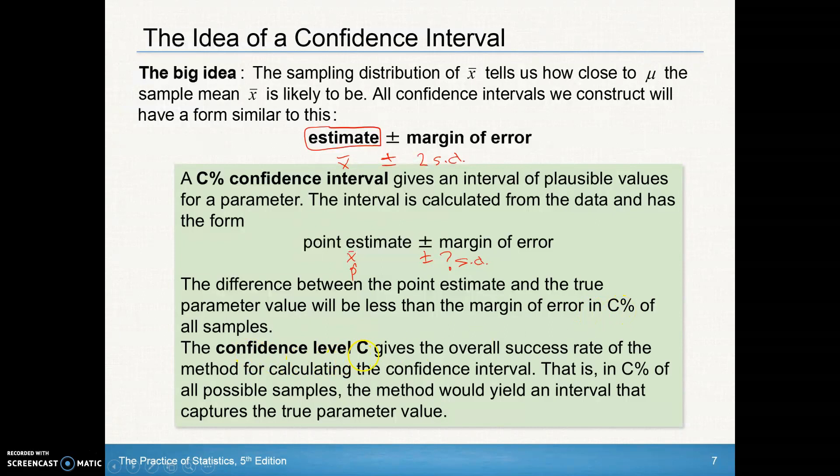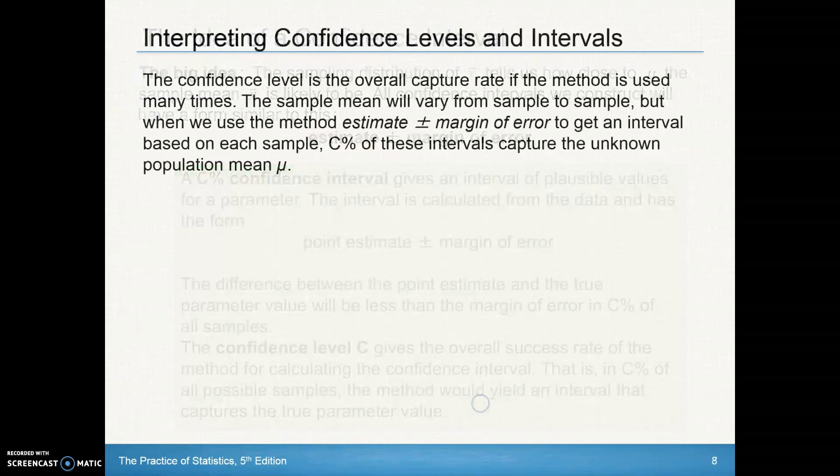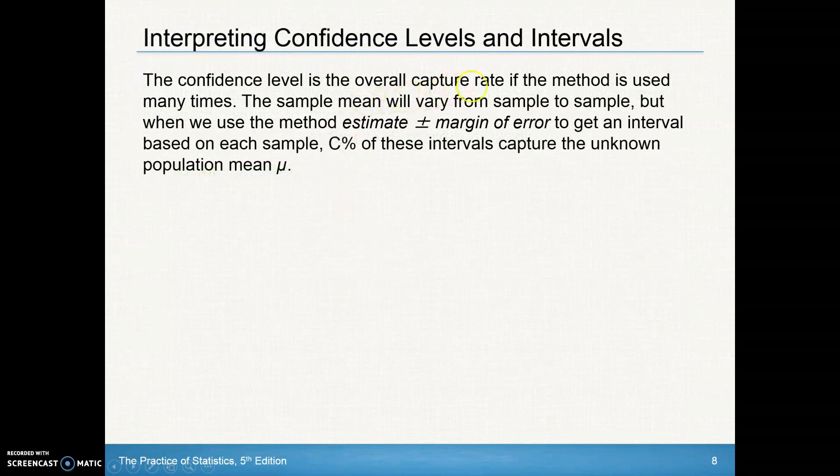The confidence level C gives us the overall success rate of the method for calculating the confidence interval. That is, in C%, or we could say like 95% of all possible samples, the method would yield an interval that captures the true parameter value. The confidence level is the overall capture rate. That's kind of a key thing there, is the capture rate, if the method is used many times. The sample mean will vary from sample to sample, like we saw in the calculator. But when we use the method estimate plus or minus the margin of error to get an interval based on your sample, C% of these intervals capture the unknown mean mu.